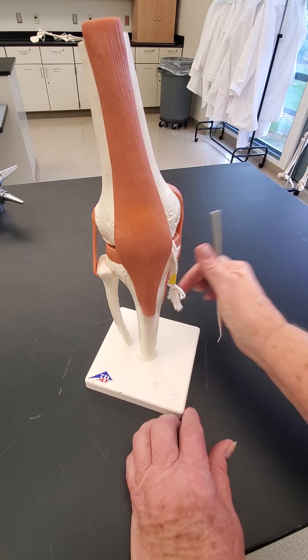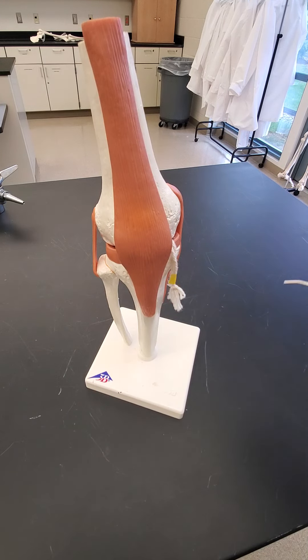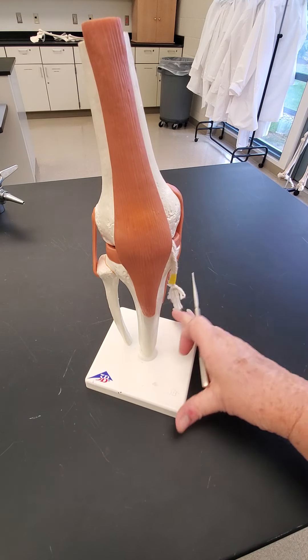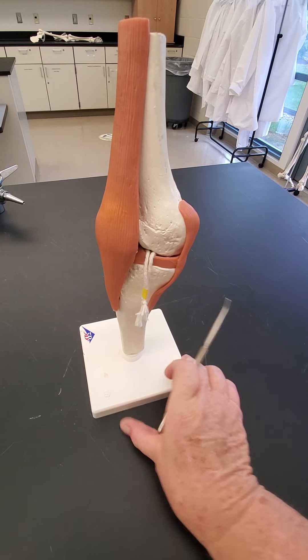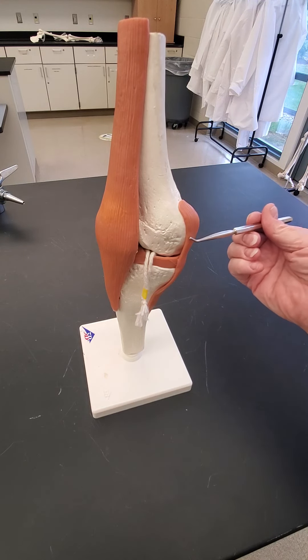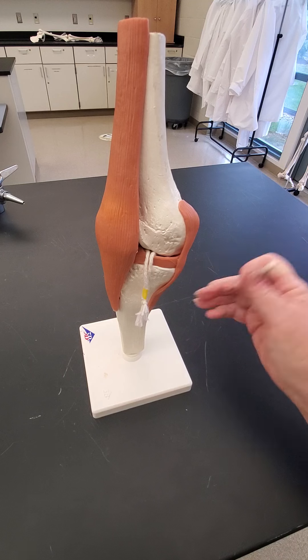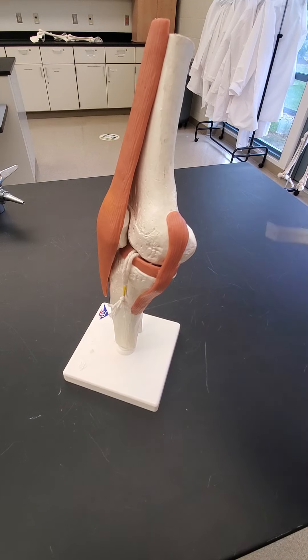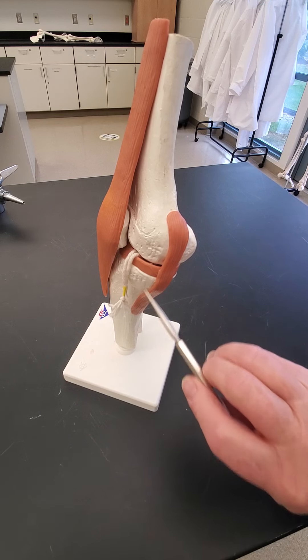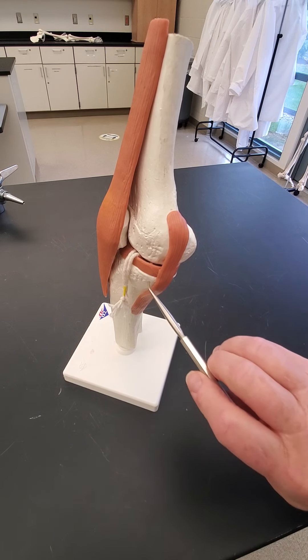Outside the joint capsule, you have two extracapsular ligaments that hold the knee together. So this is the medial collateral ligament, which will be on the same side as the tibia, because the tibia is medial, right?